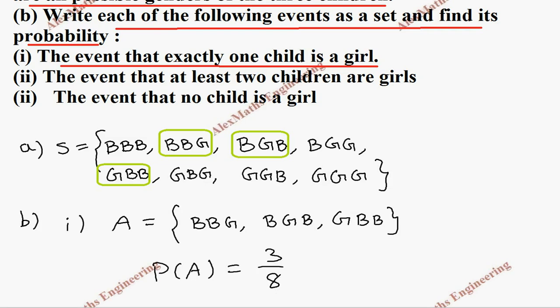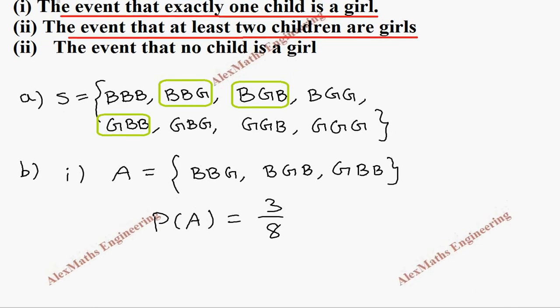Now coming to the second subdivision: the event that at least two children are girls. At least two children means two or more. So from the sample space, this is having two, and this is having two, this is having two, and this is having three. So two or more covers at least two children are girls.